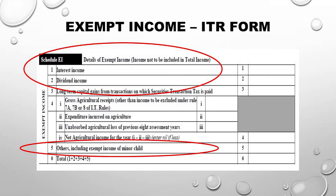Another interesting item is 'others, including exempt income of minor child.' Many people have minor children in whose name relatives have been extremely generous, giving lakhs of rupees as gifts every year. That money is invested in bank FDs generating income, or put in a partnership firm etc. How many of them have shown that income of the minor child in their own hands?